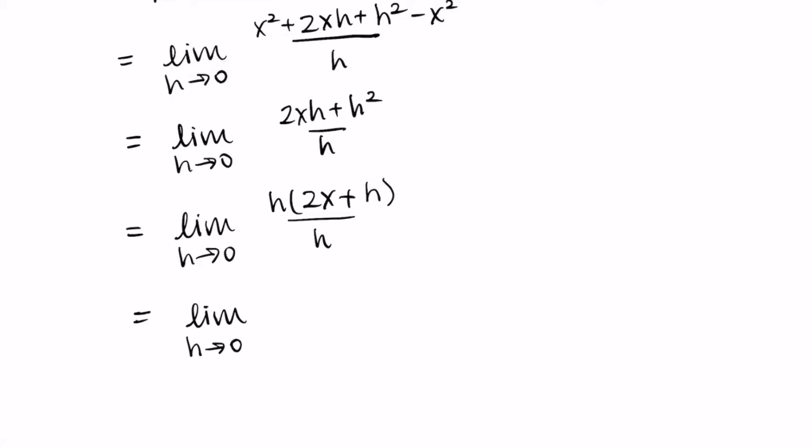When we take the limit as h approaches 0, the 2x isn't affected by the h, it's just the 2x. But the plus h, we're sending that h to 0 and so that is going to go away, meaning we are just left with 2x.